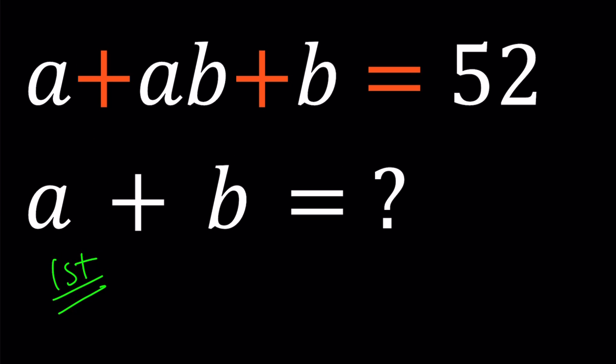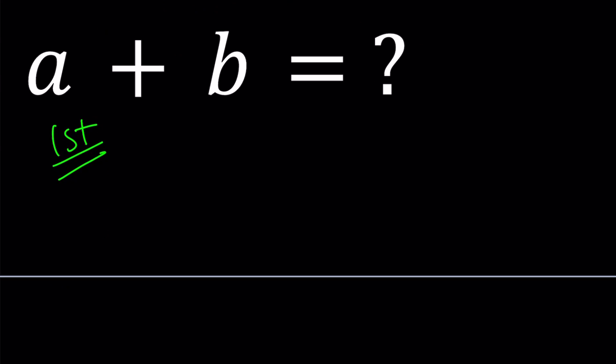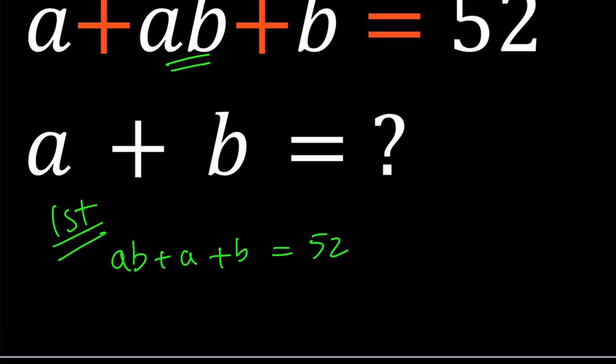With Simon, we want to write the product first. ab plus a plus b equals 52. First of all, notice that there is no common factors on the left-hand side. We can't just factor it. We have a product and a sum. So how do you do it?